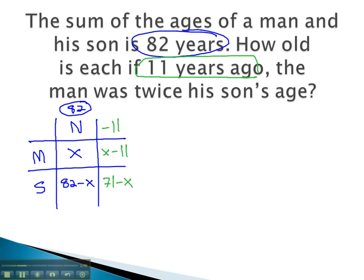We use the rest of the problem to make our equation. The man was, or equals, twice his son's age, 2 times the son. We then can replace the m with what he was in the past, x minus 11.